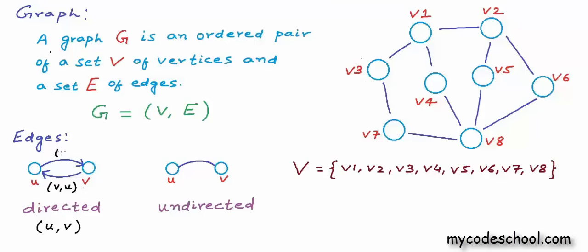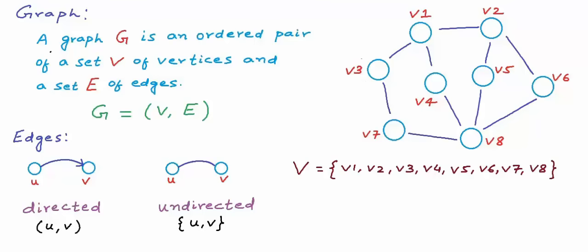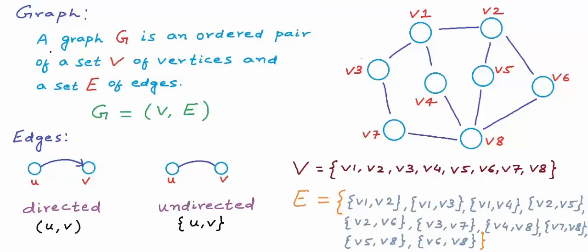The edge (U, V) and the edge (V, U) are not the same. Now, if the edge is undirected, the connection is two way. An undirected edge can be represented as an unordered pair. Because the edge is bidirectional, origin and destination are not fixed — we only need to know what two end points are being connected by the edge. Now that we know how to represent edges, we can write the set of edges for this example graph: we have an undirected edge between V1 and V2, then V1 and V3, then V1 and V4, and so on. This is my set of edges.